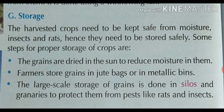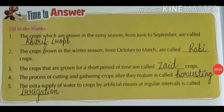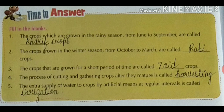I hope everything is clear to you. Time to answer — fill in the blanks. The crops which are sown in the rainy season from June to September are called Kharif crops. The crops grown in winter season from October to March are called Rabi crops. The crops that are grown for a short period of time are called Zaid crops. The process of cutting and gathering crops after they mature is called harvesting. The extra supply of water to crops by artificial means at regular intervals is called irrigation.